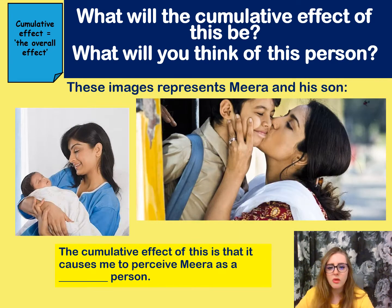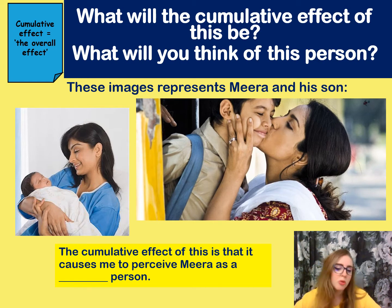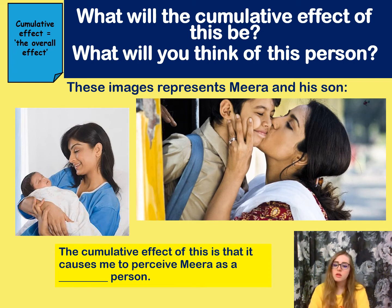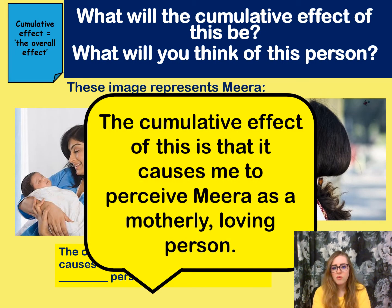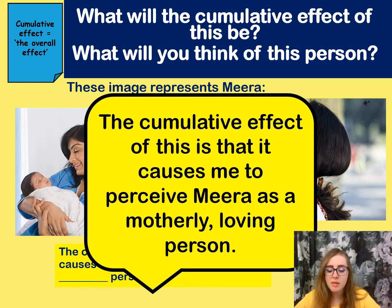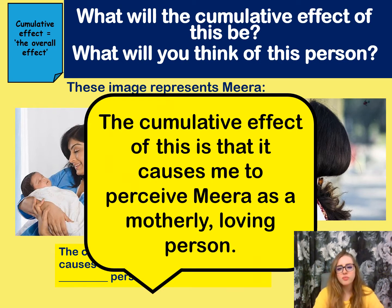Now let's look at Mira — Mira holding her son when he's a baby, then Mira when he's older. Pause the video and have a go: what's the cumulative effect of these images? Remember, these images are together, so think overall — what do you think about her? The cumulative effect is that it causes me to perceive Mira as a motherly, loving person. I've seen her with a young baby and with an older child, and together that makes me think she's motherly. If I just saw one image, that effect would be lessened.